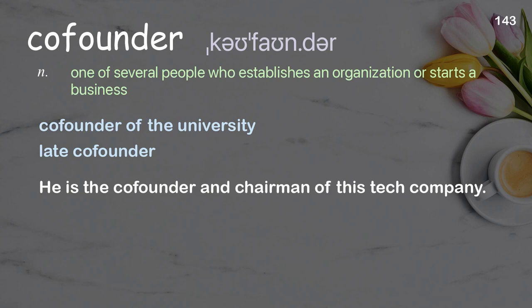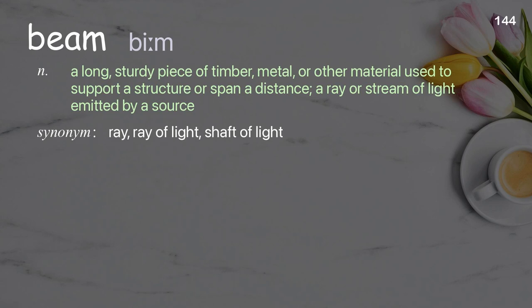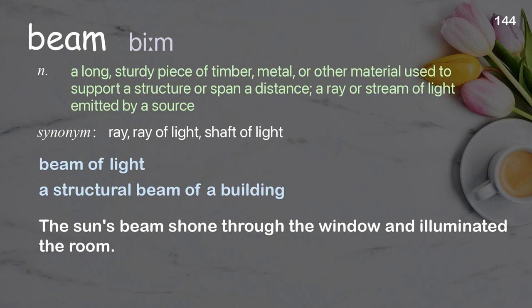Beam: a long, sturdy piece of timber, metal, or other material used to support a structure or span a distance; also a ray or stream of light emitted by a source. Examples: beam of light, a structural beam of a building. The sun's beam shone through the window and illuminated the room.